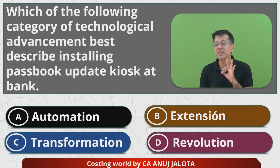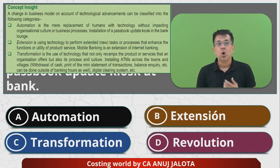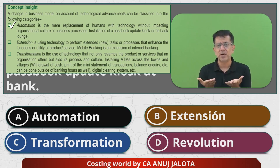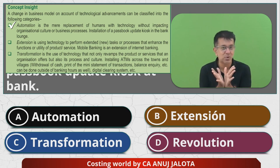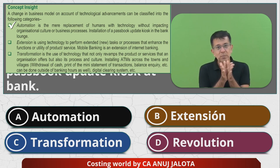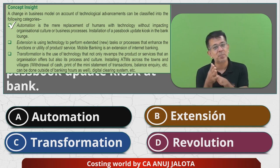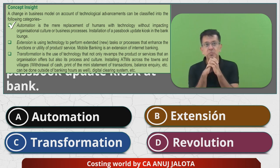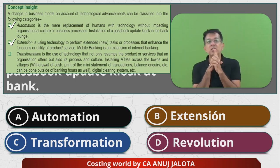ICA describes automation, extension, and transformation in three lines, which I love. Automation is the mere replacement of human beings with technology without impacting organizational culture or business processes. Installation of the passbook kiosk is the best example of that — human beings get replaced by machines. One day drivers will also get replaced by self-driven cars — that is again automation.